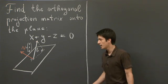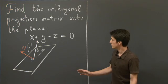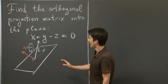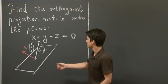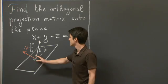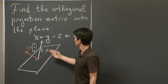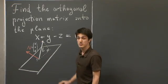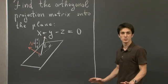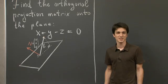So before we start, let me just recall what a projection matrix is. You've seen this sketch here a million times already. A projection matrix takes any vector in 3-space and projects it down onto the plane, a two-dimensional subspace of R3. I'm going to give you a few moments to consider the problem for yourselves, and then you'll see my take on it.